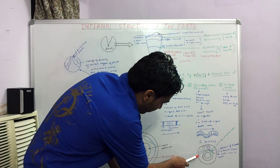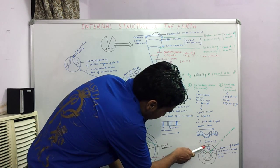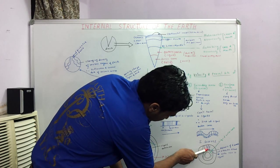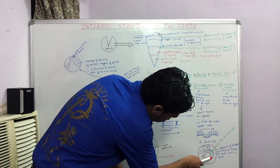We can understand it with the help of these diagrams. Here, at the epicenter, the waves are produced. And the S waves travel but they stop at the outer core which is in a liquid state.